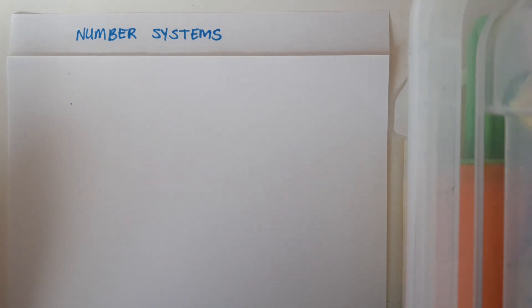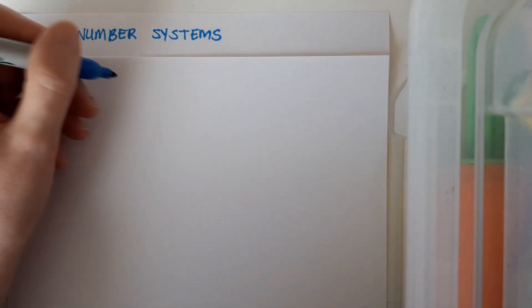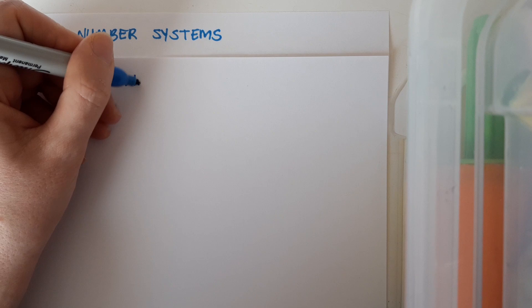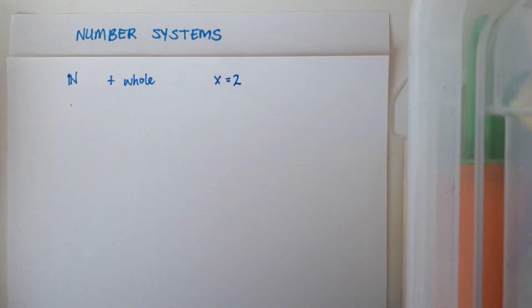This video is about number systems, so we need different types of numbers to do different things for us. Natural numbers, for example, are the counting numbers. They're positive whole numbers and they can be used to solve some linear equations like x equals 2.